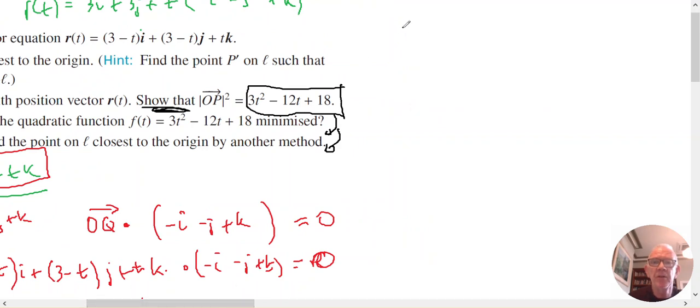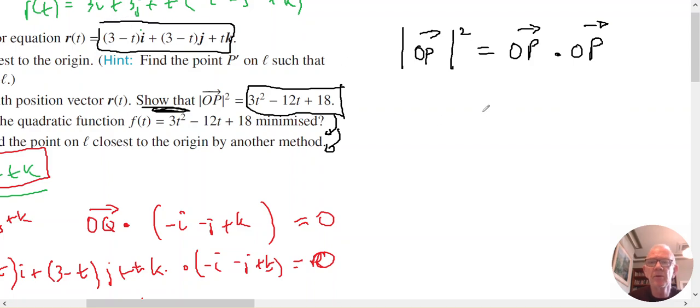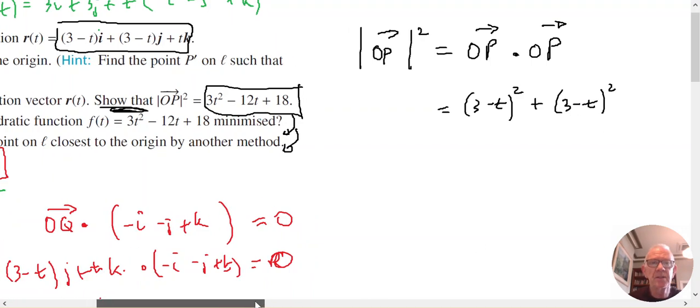I know that the magnitude of a vector squared is equal to the vector's dot product with itself. Since OP is this, therefore that's going to be (3-T) times itself, plus (3-T) times itself, plus T squared.